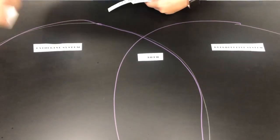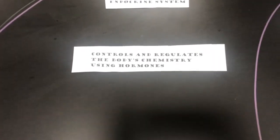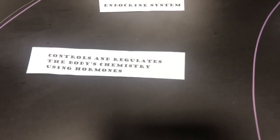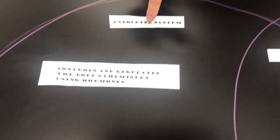First with the endocrine system, we can say that the endocrine system controls and regulates the body's chemistry using hormones. That's not part of the reproductive system, so it only falls under the endocrine system.